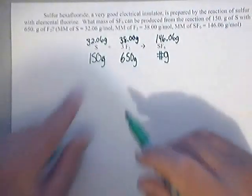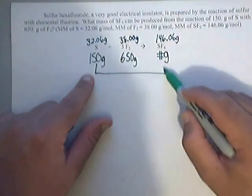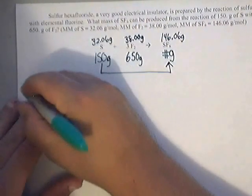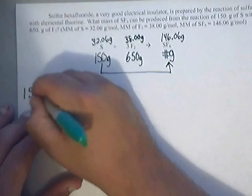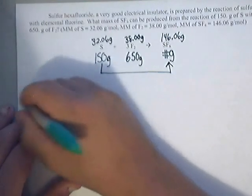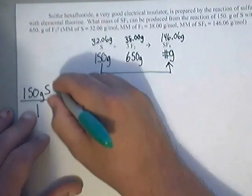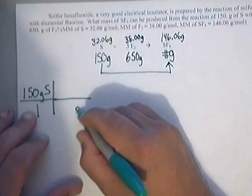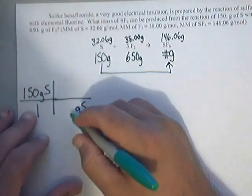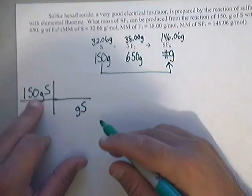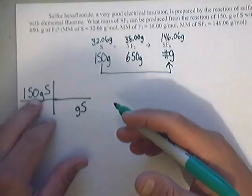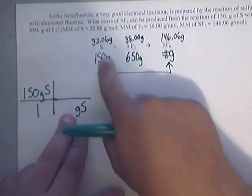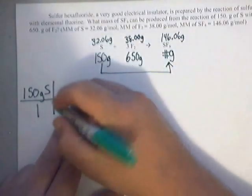So we're going to go first from grams of this to grams of this. So I'm going to write down 150 grams of S. That's my given so I'm going to put it over one. Then I'm going to look and put grams of S down here. Now after the first time you write grams down it was a given. Now anytime after that grams will always be a molar mass. So the molar mass of this sulfur is this 32.06.